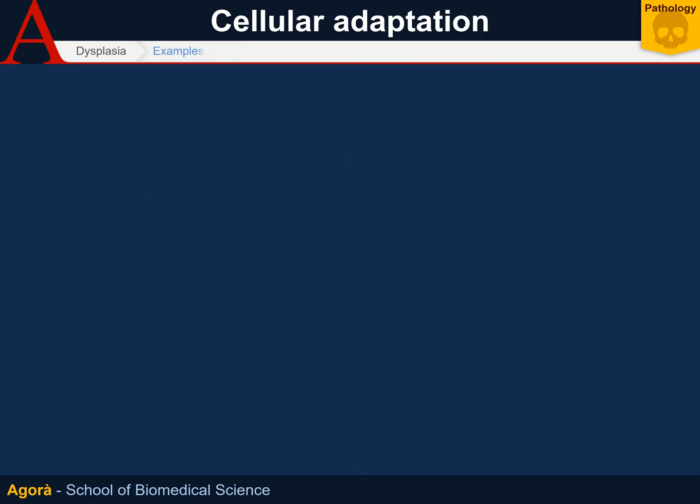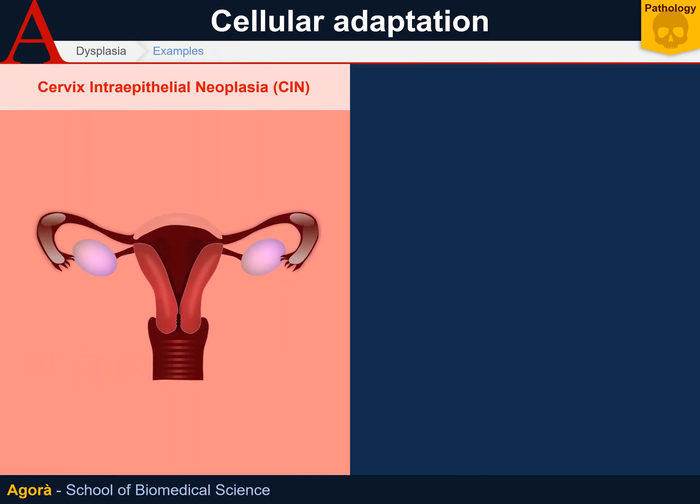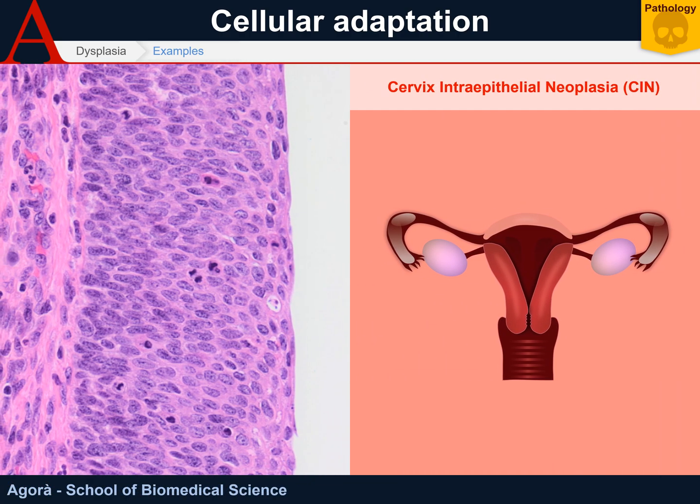A well-known example of dysplasia is that of the uterine cervix, the so-called cervical intraepithelial neoplasia. In this case, the undifferentiated cells of the basal layer progressively replace those of the various epithelial layers. For example, the epithelium may only be composed of undifferentiated cells, with perhaps a single superficial layer that is slightly differentiated.